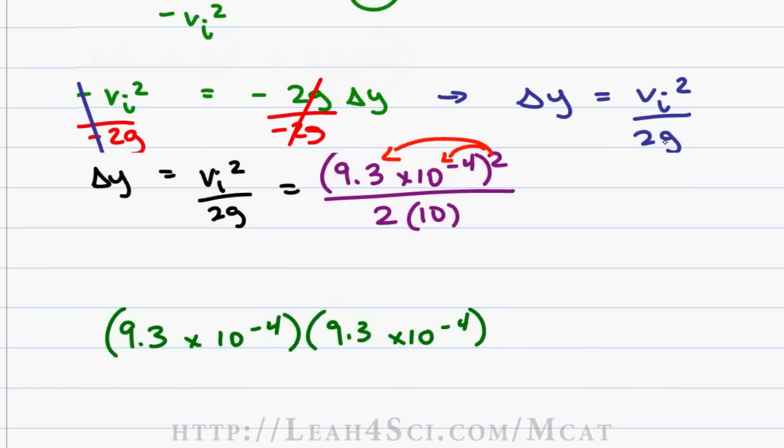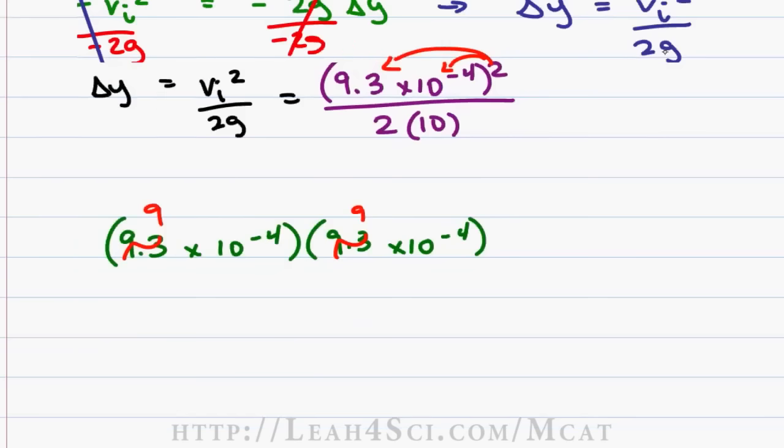We have 9.3 times 10 to the minus 4 times 9.3 times 10 to the minus 4. Now remember, on the MCAT you're allowed to round so we'll round 9.3 down to 9 and then look for an answer that is slightly greater to make up for rounding down. When multiplying exponents, you multiply the individual numbers so here we have 9 times 9 which is 81 and then we add the exponents.